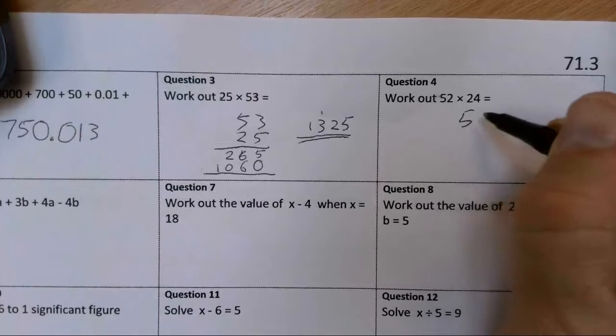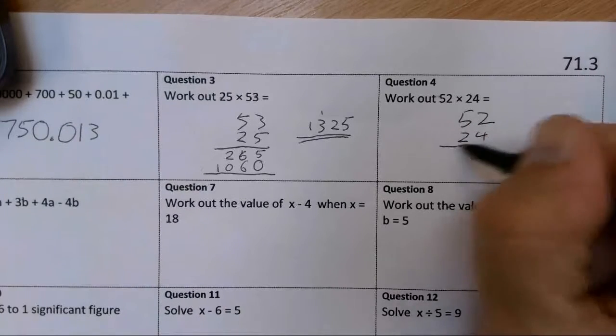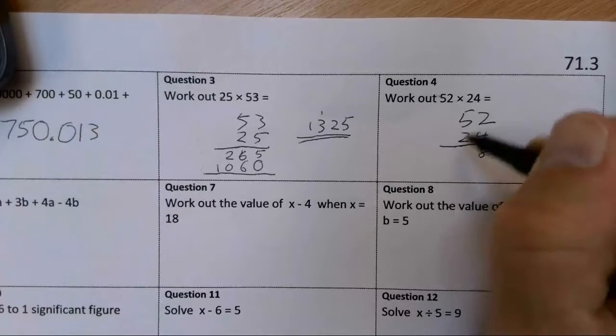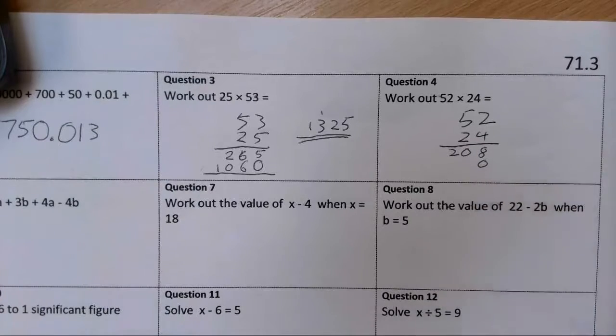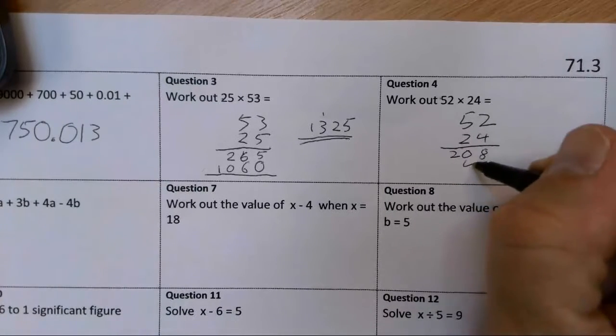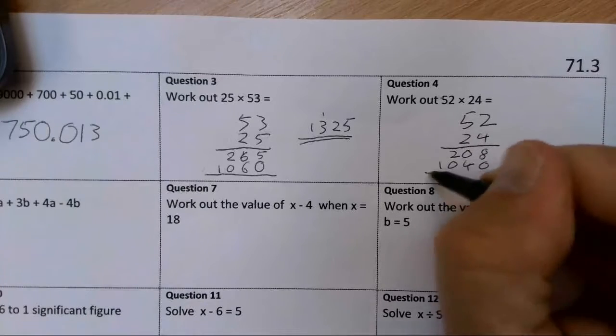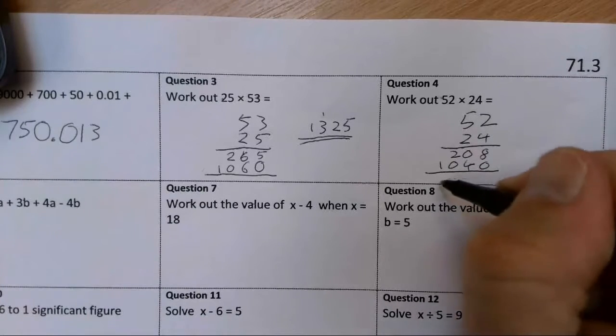52 times by 24. 52, 24. 4 times 2 is 8, 4 times 5 is 20. Put a zero in, 2 times 2 is 4, 2 times 5 is 10. 1, 2, 4, 8.